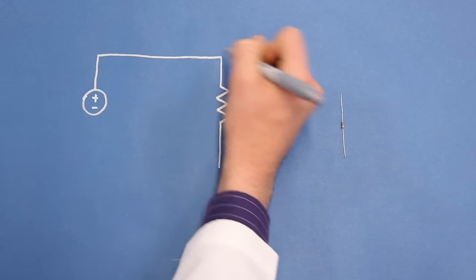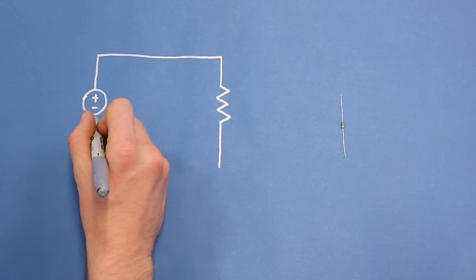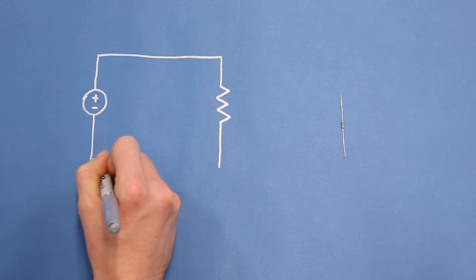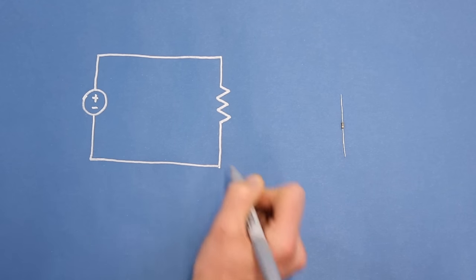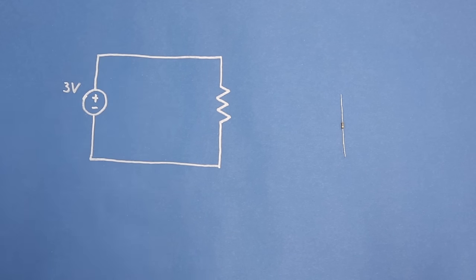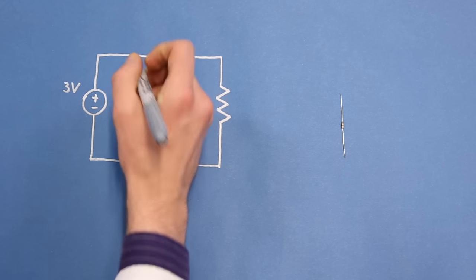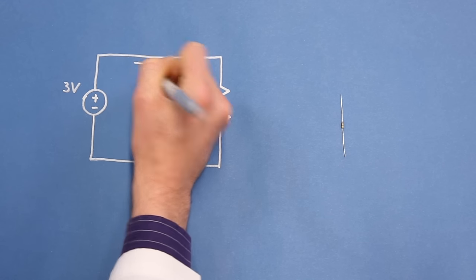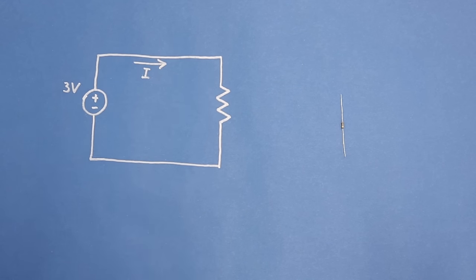A voltage source, similar to a battery, will supply as much current as needed to maintain a particular voltage between the terminals. Now that we have a circuit, current will flow from the positive terminal of the voltage source, through the resistor, and back to the negative terminal. The power supply will be set to three volts, and it will also tell us how much current it is supplying. With that information, we can determine the resistance of the resistor. Let's try it.